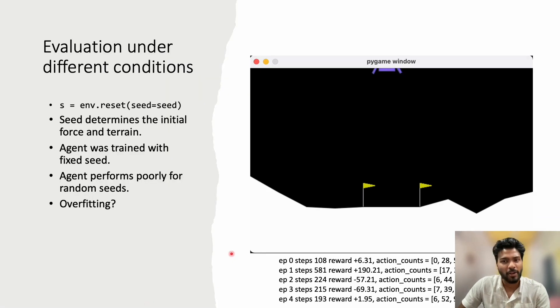So far, the environment was constant throughout the training process. To make the task a little more difficult, I evaluated the agent using different seeds in every episode. Having a different seed changes the terrain and the initial force on the lander. Since the agent was trained using a fixed seed, it did not perform very well.